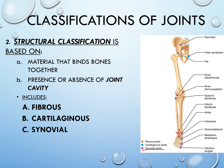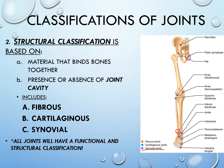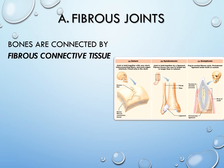Each joint has both a functional and structural classification — it's not one or the other. Every joint will have an amount of movement and a material that binds it together, so you always need both classifications.